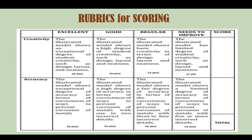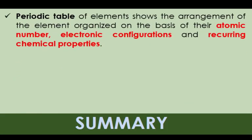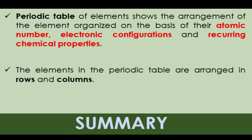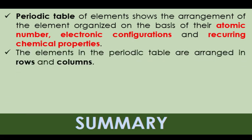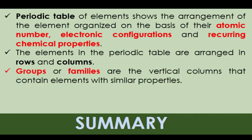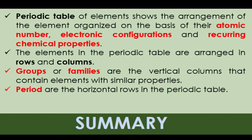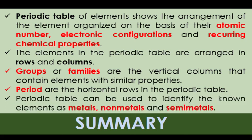To sum things up, the Periodic Table of Elements shows the arrangement of elements organized on the basis of their atomic number, electronic configuration, and recurring chemical properties. The elements are arranged in rows and columns — groups or families are the vertical columns containing elements with similar properties, while periods are the horizontal rows. The Periodic Table can also be used to identify elements as metals, non-metals, and metalloids by identifying their location and periodic trends.